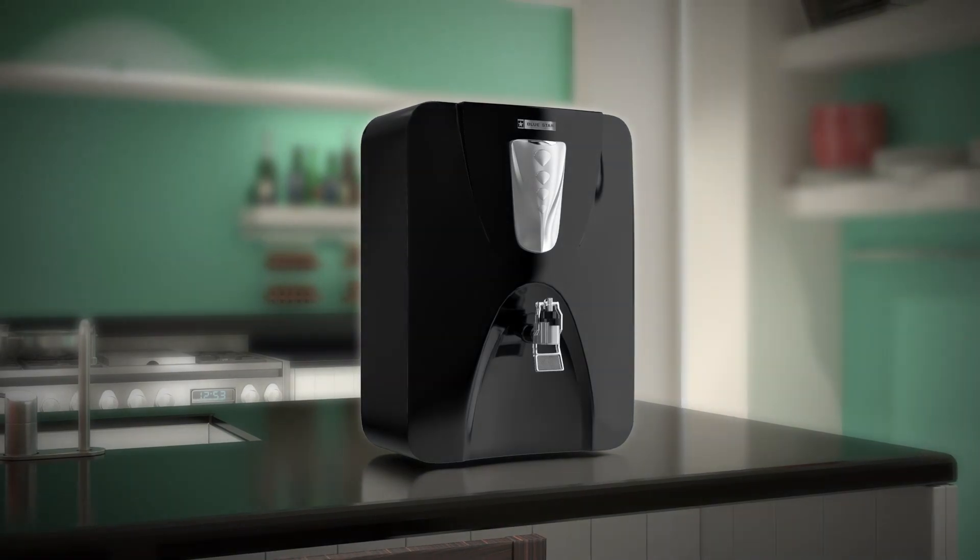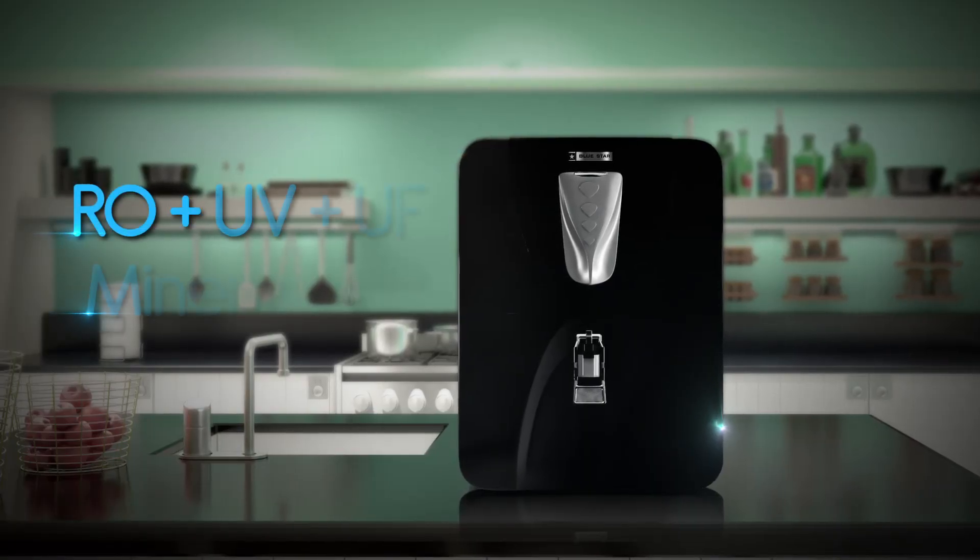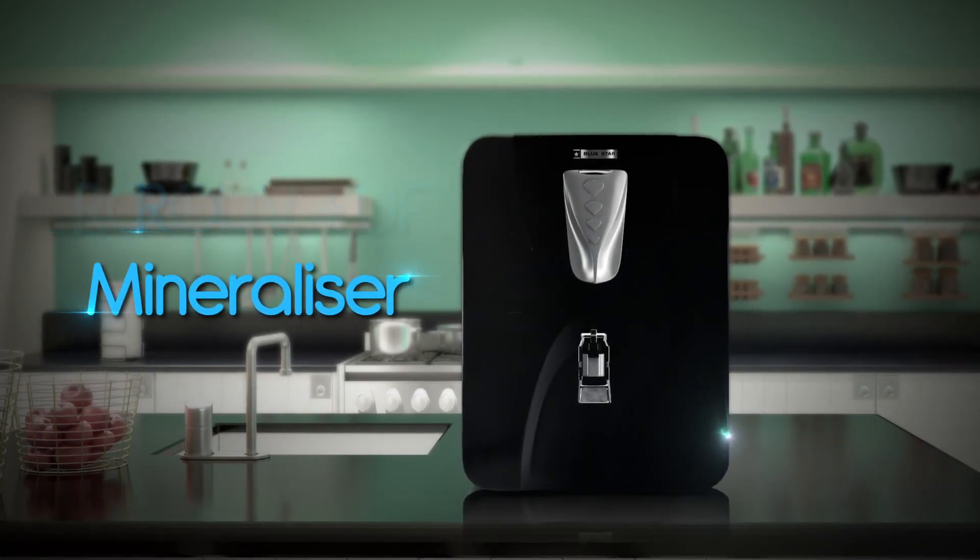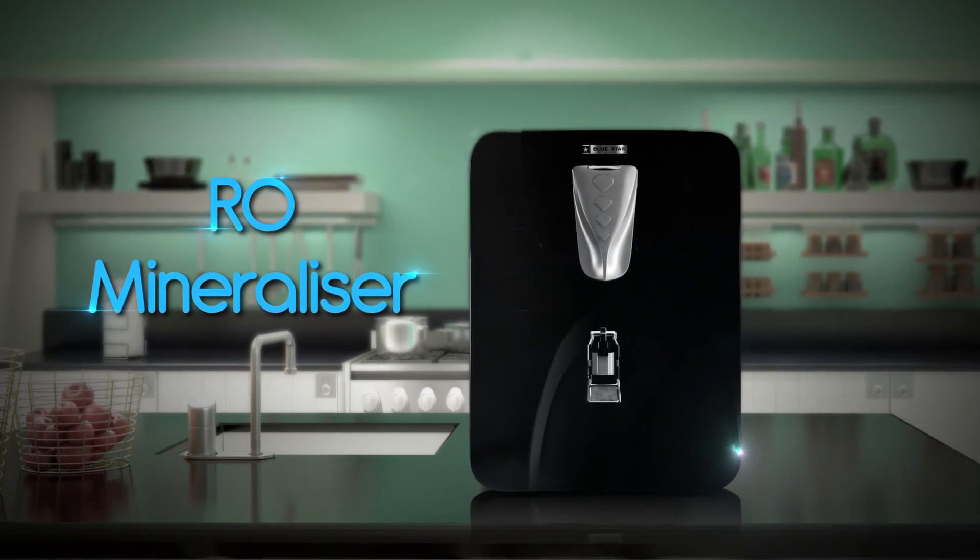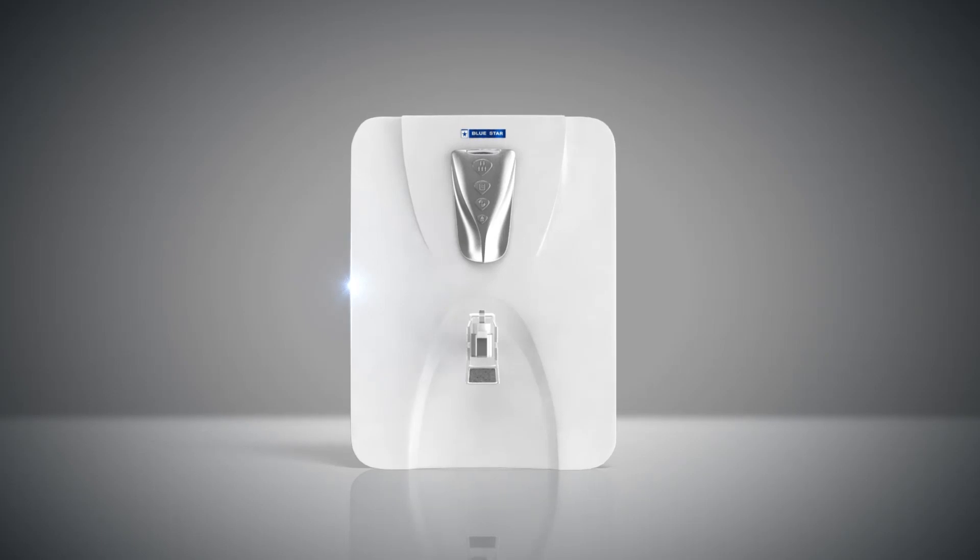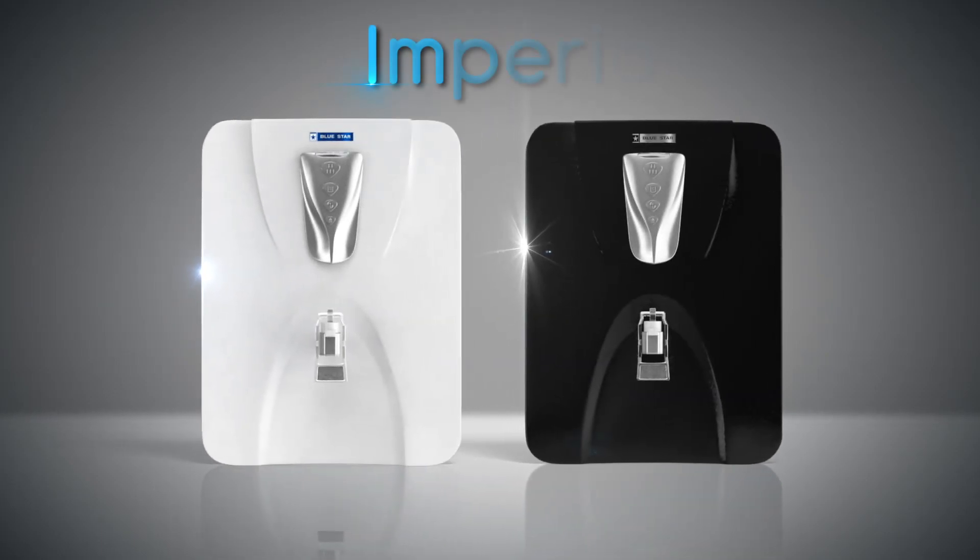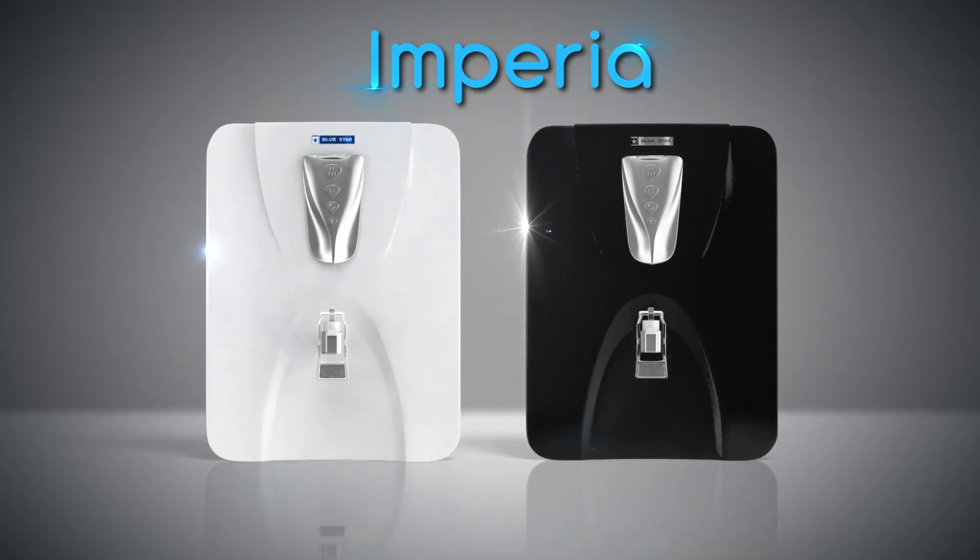The Imperia series is available in RO plus UV plus UF, or RO plus UV, or RO with mineralizer technology models, along with two color variants: white and silver, and black and silver.